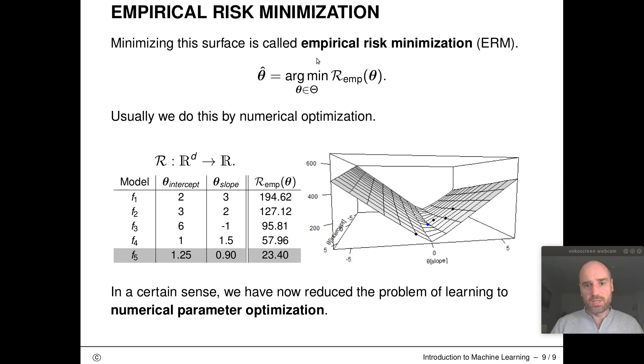So this is in a certain sense what machine learning is all about: taking a certain hypothesis space, defining a loss function that measures errors, and then picking an appropriate numerical optimization algorithm that helps you optimize the surface and find this optimal parameter vector. These are your learned parameters. In a certain sense we've now reduced the problem of learning merely to a problem of numerical parameter optimization.